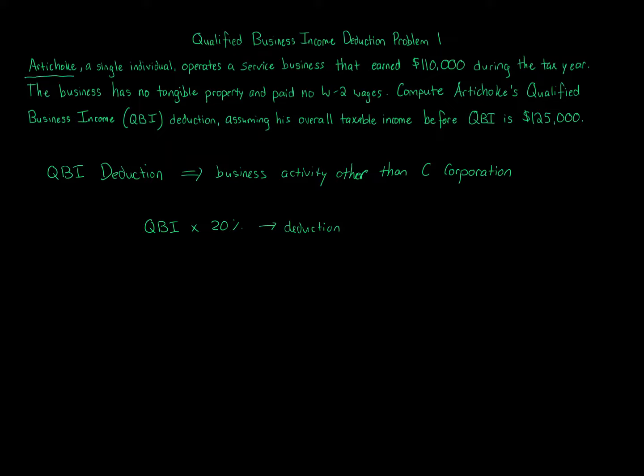Here, we've got Artichoke, a single individual, and Artichoke owns a service business. We're not specifically told what it is, and if you're not told what kind of business it is, then we assume it's a sole proprietorship. That's the idea in the law. If it's not set up, then it'll be a sole proprietorship, so that does qualify here.